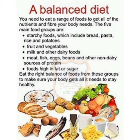The five main food groups are: first, the starchy foods which include bread, pasta, rice and potatoes. Next, fruits and vegetables. Next, milk and other dairy foods. Next, meat, fish, egg, beans and other non-dairy sources of protein. And last, foods high in fat or sugar.